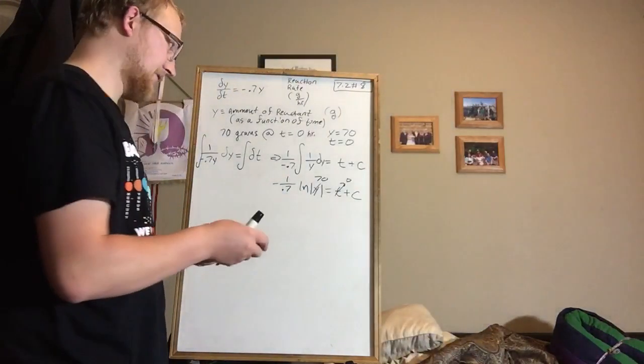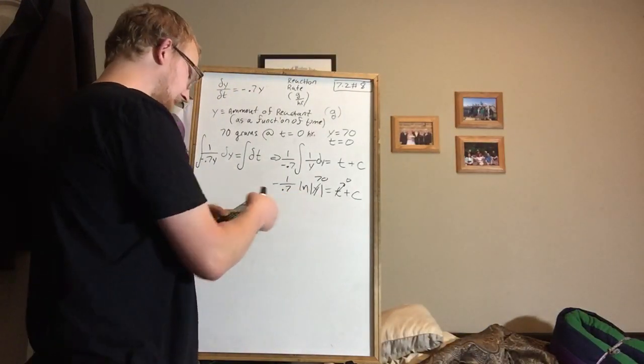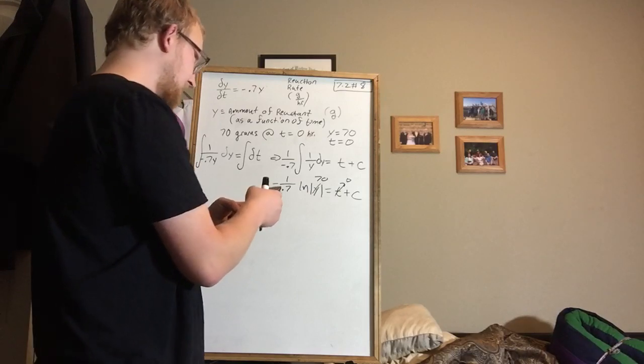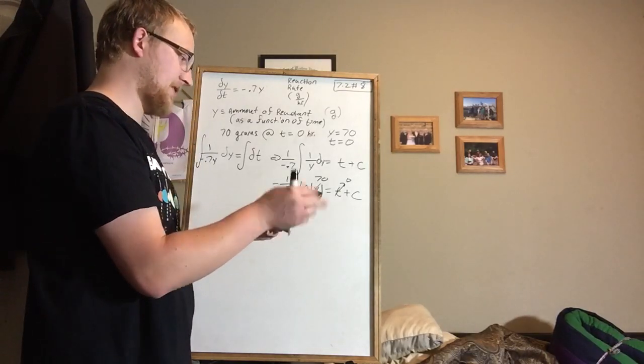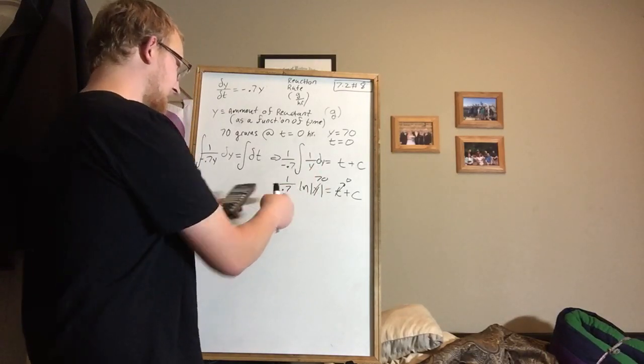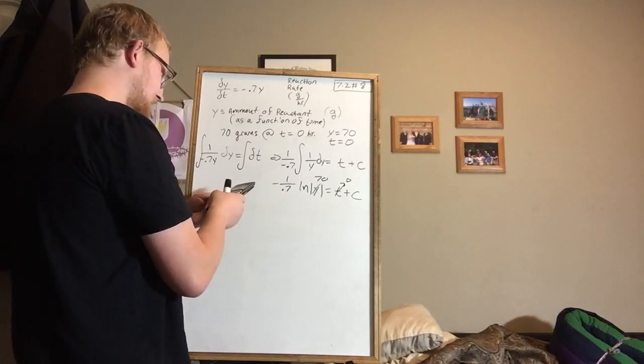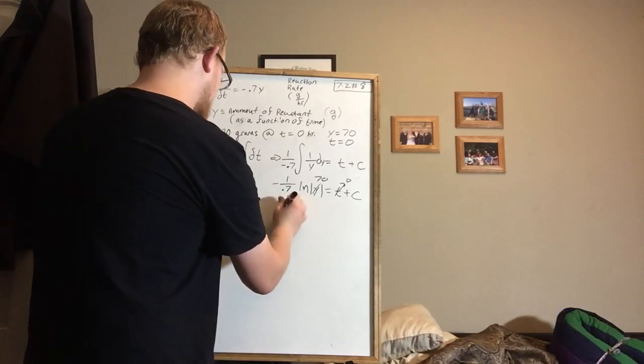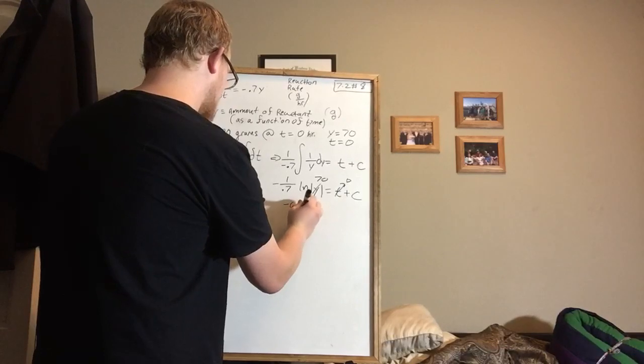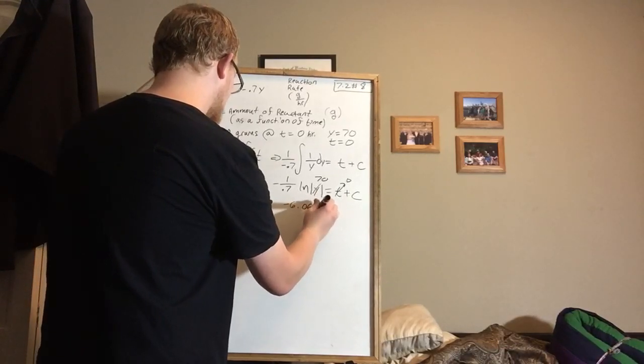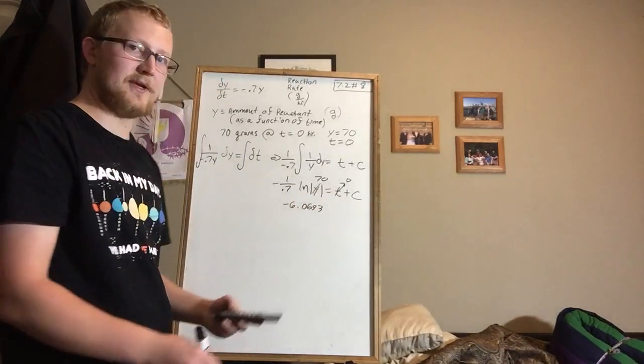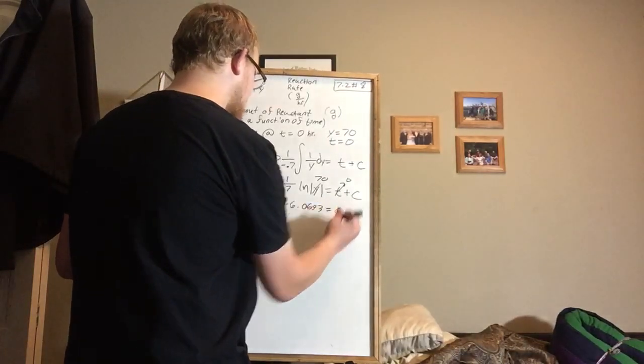It asks us to round to the nearest tenth. Ln of 70 is roughly 4.248 divided by negative 0.7. It's going to give us minus 6.0693, and I think that's probably good enough rounding to the nearest tenth, is equal to c.